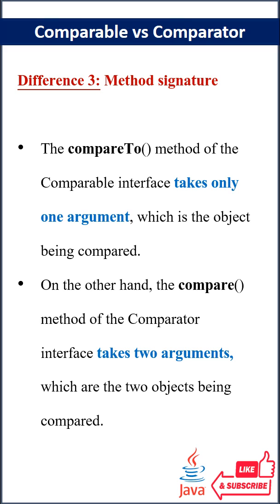Third difference, in terms of method signature. The compareTo method of the Comparable interface takes only one argument, which is the object being compared. And the compare method of the Comparator interface takes two arguments, which are the two objects being compared.